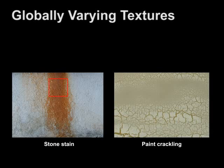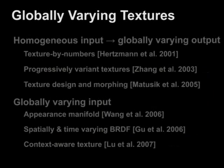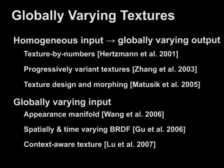Globally varying textures are those with spatially varying patterns. Here are just a couple of examples. These kinds of textures are very common. Because of their prevalence, globally varying textures have been widely studied, as shown in this list of recent work.